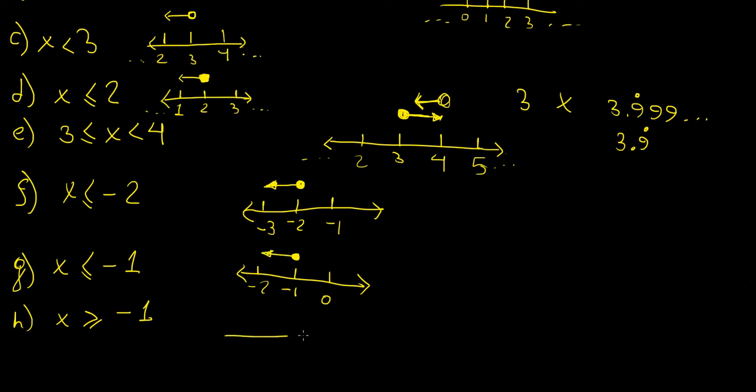And the final one is minus 1 here, minus 2, 0. We want it to be equal to or greater than that, so it's going to be pointing in this direction.